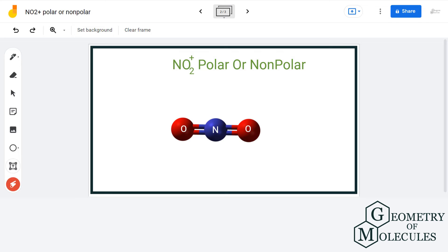If we look at the molecule in 3D, it is a linear structure and the dipole moments cancel each other out because of the opposite directions. The net dipole moment in this molecule will be zero. Thus, we can conclude that NO2+ is a non-polar molecule.